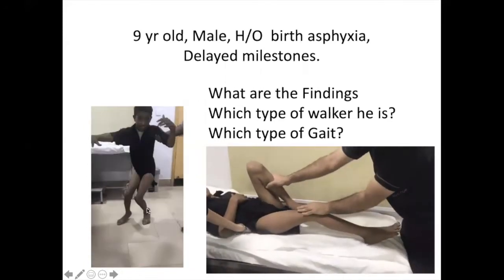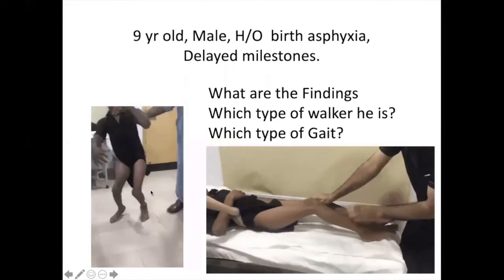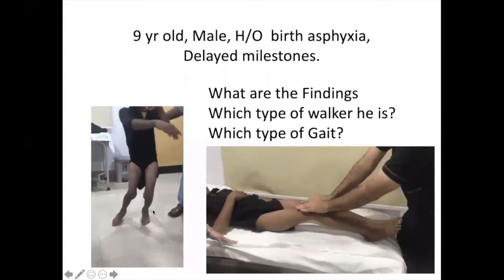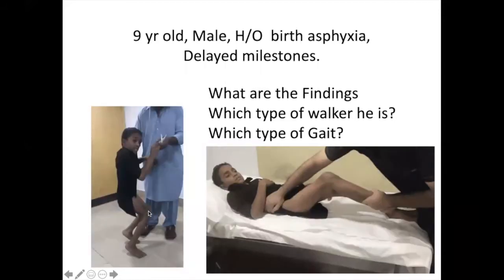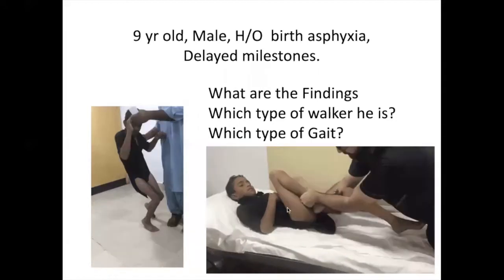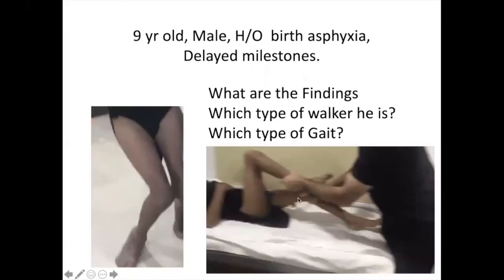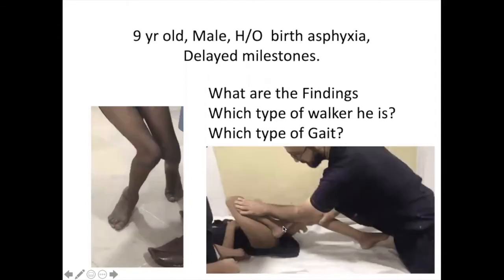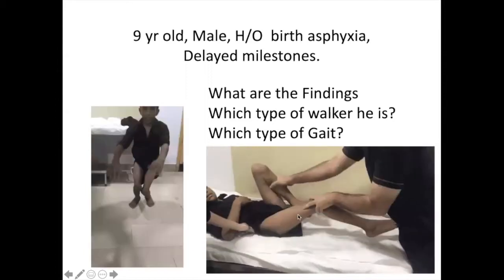He was needing surgery a year or two years before to correct the hamstring spasticity and the ankle. He is not in a true crouch gait. The popliteal angle is 90 degrees or below. The Thomas test on modified Thomas was 10 degrees on one side, 40 degrees on the other.